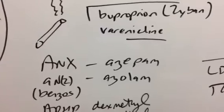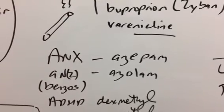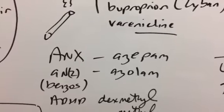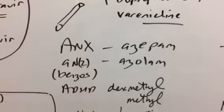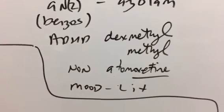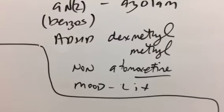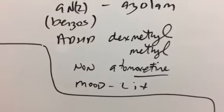And then if you smoke, maybe you have some anxiety. So the azepam and azolam. So in anxiety, you kind of have that Z sound that might help you remember that the benzos are the azepam, azolam. The ADHD, so dexmethylphenidate, methylphenidate. The non-stimulant was atomoxetine. Again, watch out for that oxetine stem. And then the mood stabilizer, Li+, which is lithium.